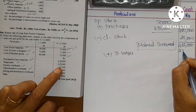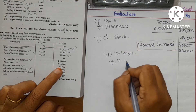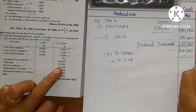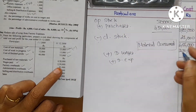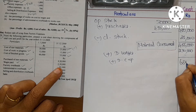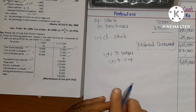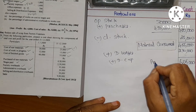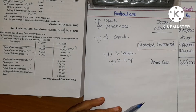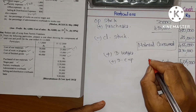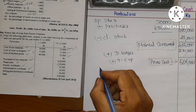Material consumed gives us a total of 5,55,000. So the prime cost is 5,55,000.